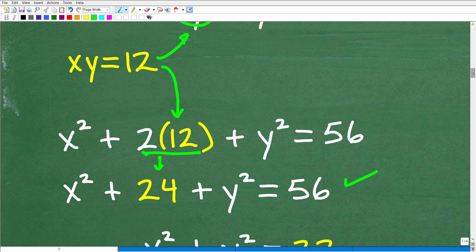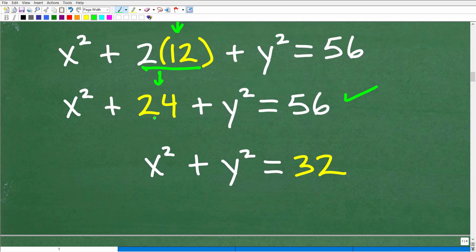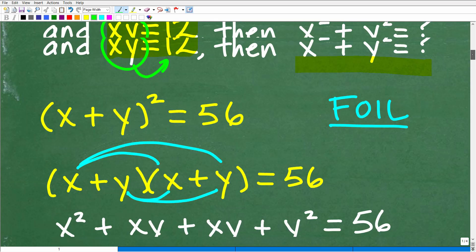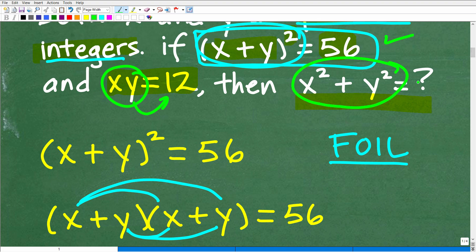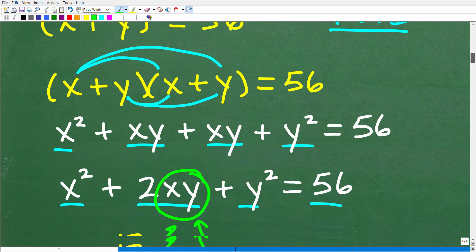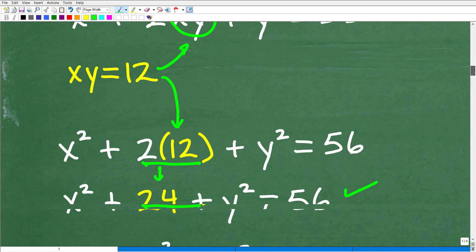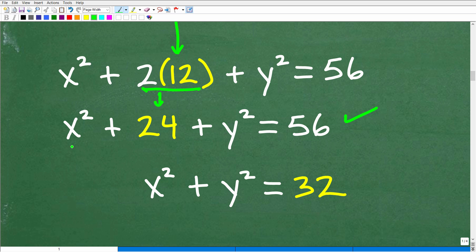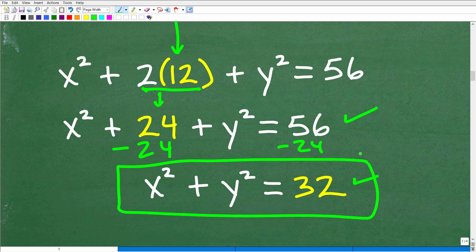So at this point, I have this equation simplified down to here. But remember, the question is asking, what is x² + y² equal to? Okay, so what is x² + y² equal to? Well, right here, all I need to do to figure out what x² and y², what that's equal to is just move this 24 to the other side of the equation. So I would just subtract 24 from both sides of the equation. So 56 minus 24 gives me 32. And so this leaves me with x² + y² on the left-hand side. So this right here would be the final result.